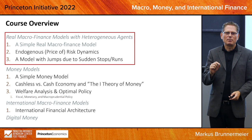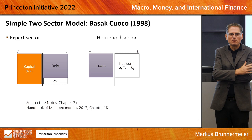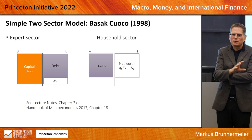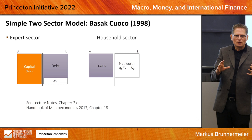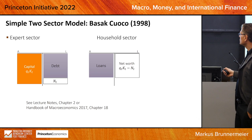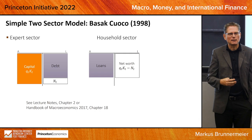I'll start with the Brunnermeier-Sannikov model, which is the simplest. I'll do it because it's so simple, and then I'll say it has a lot of shortcomings — all the risk dynamics I described don't really pop up until we enrich the model. But we always start simple and then build on it. Here's the model. There are two sectors: an expert sector and a household sector. The expert sector is the only one who can produce something; the household sector cannot produce anything.